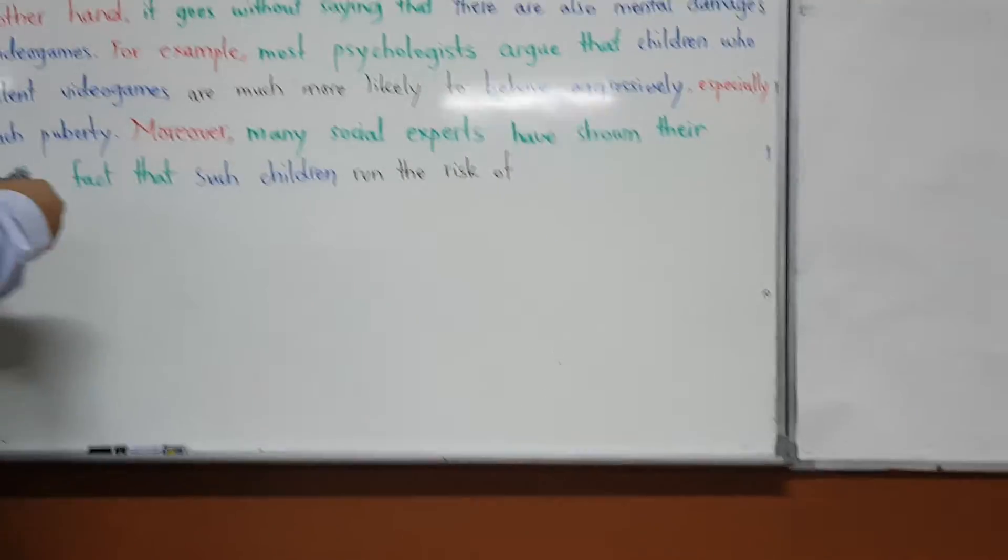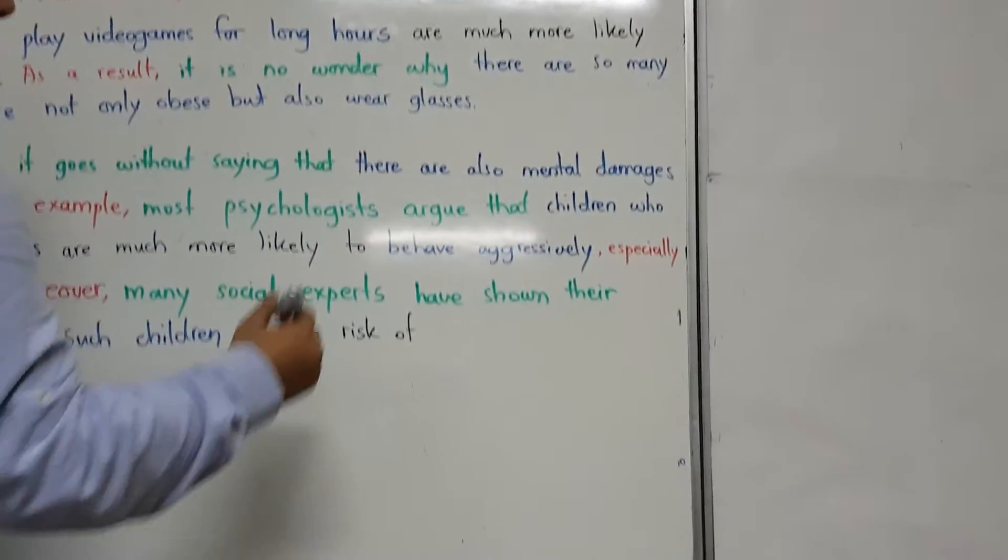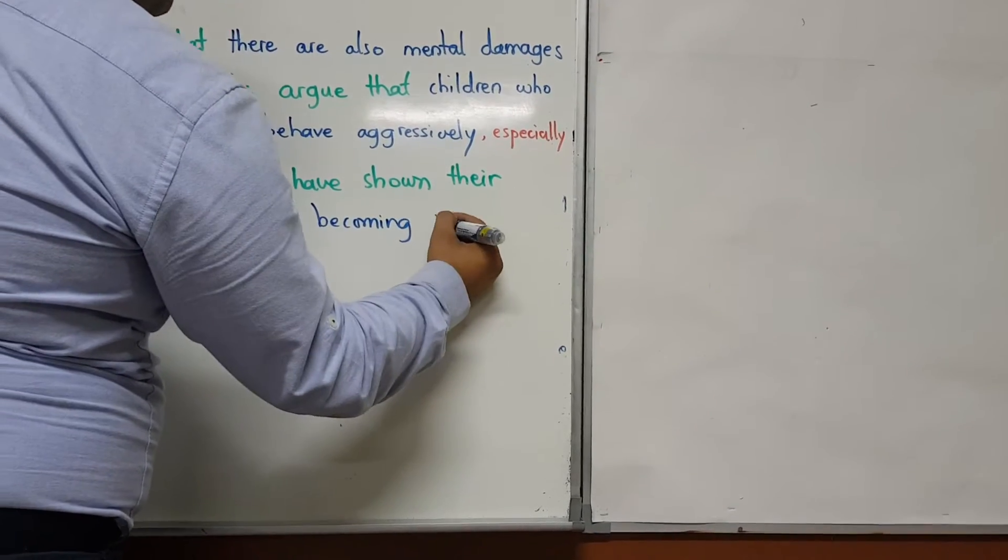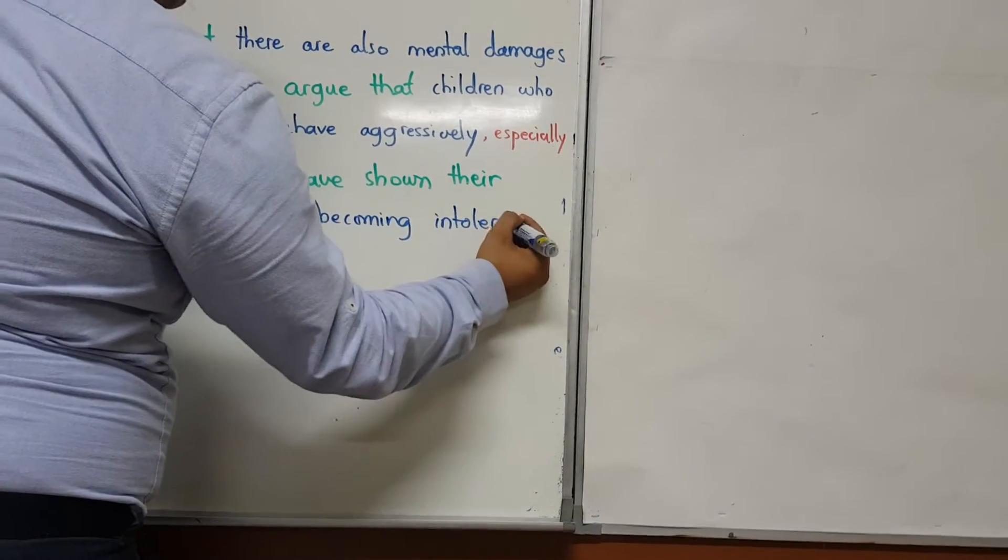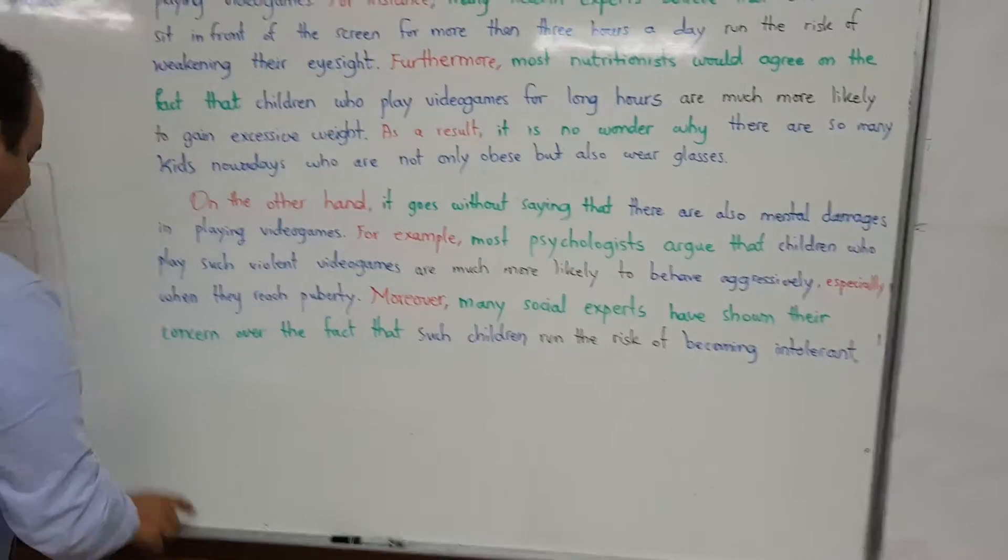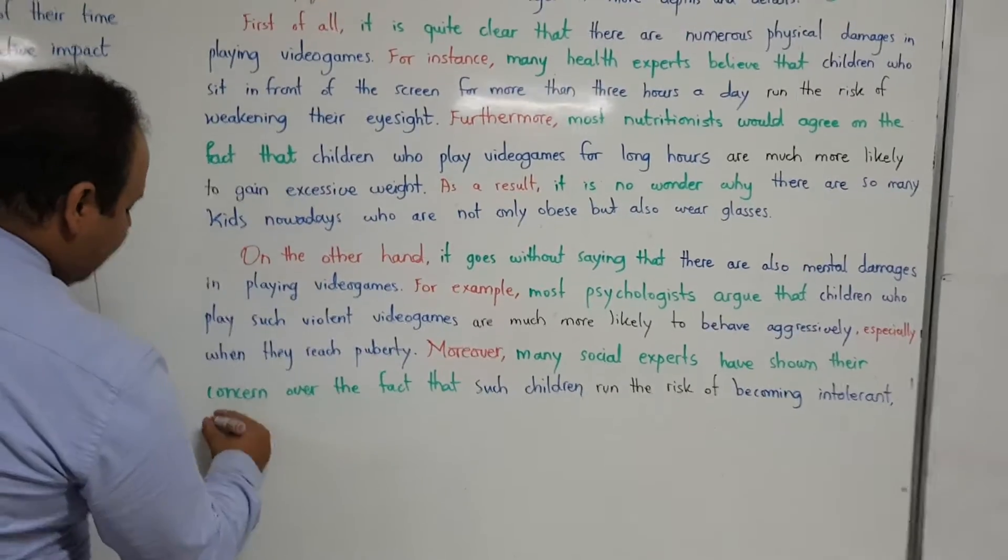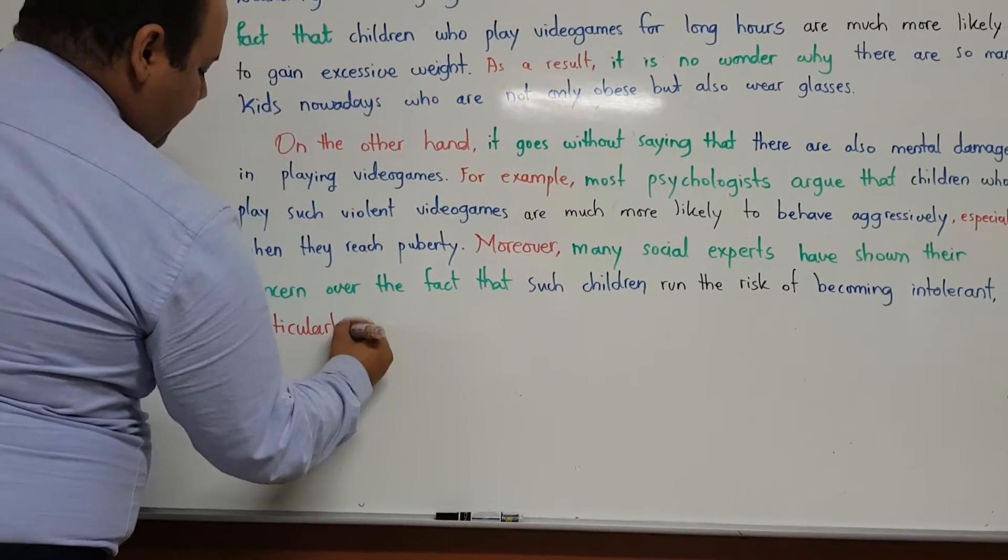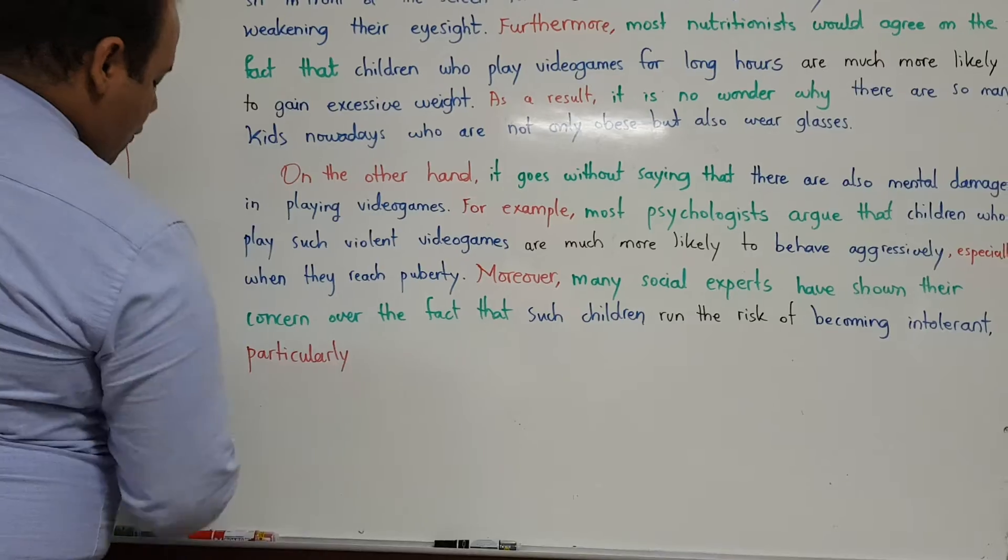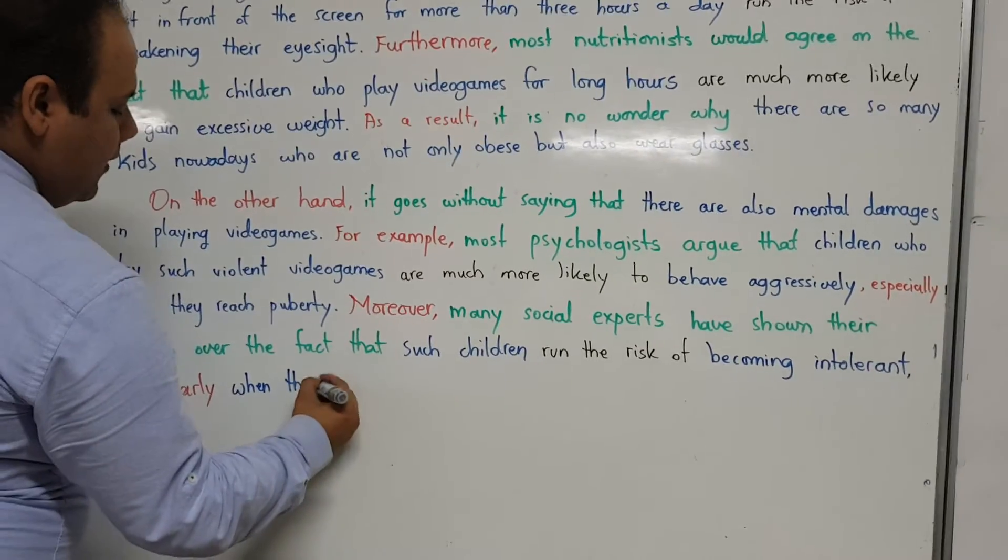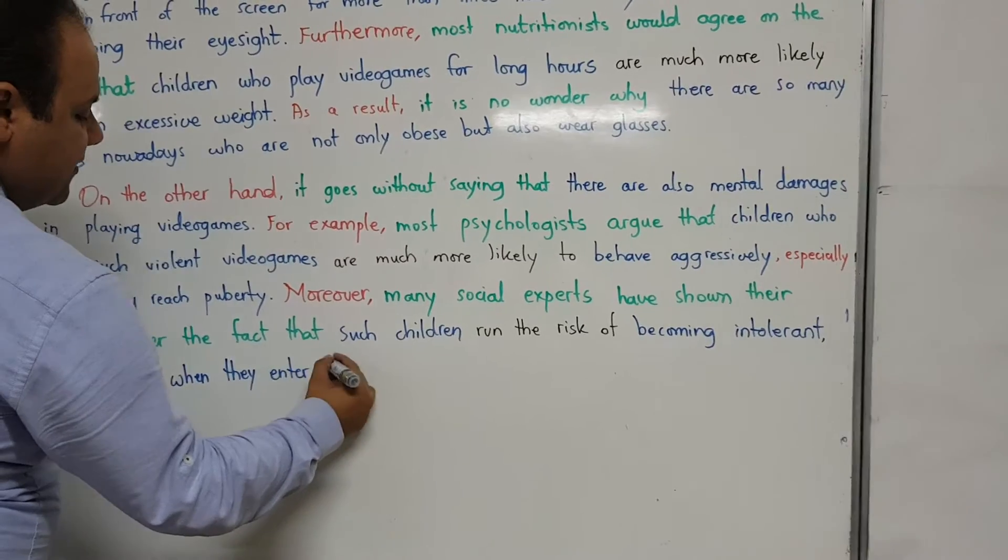Now remember, after run the risk of you have to use word plus ing, run the risk of becoming intolerant. Especially, now instead of especially I can say particularly. Particularly when they enter the society.